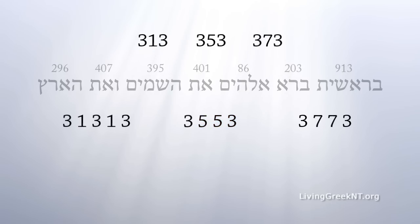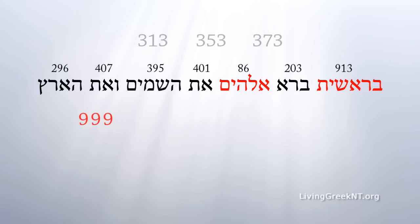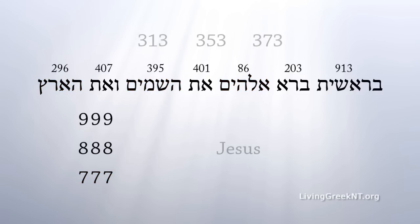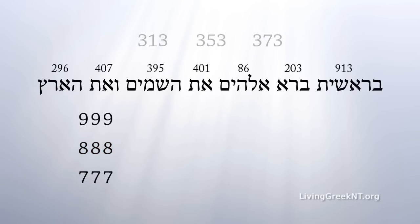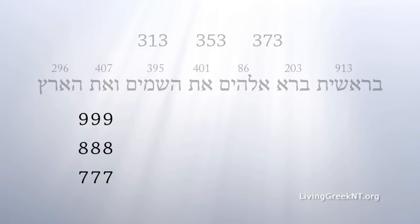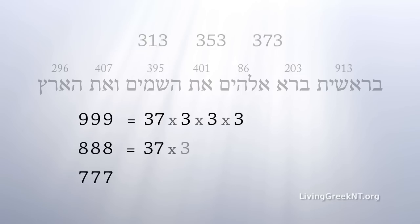The total value of all the words in Genesis 1:1 is 2701, which is 37 times 73. The value of two of the word groupings is 999 each. The value of another grouping is 888. And the value of another grouping is 777. We get the name of Jesus from the Greek word Iesus, whose numeric value is 888. These numbers are all palindromes. Breaking them down to prime factors: 999 is 37 times 3 times 3 times 3; 888 is 37 times 3 times 2 times 2 times 2; and 777 is 37 times 3 times 7.